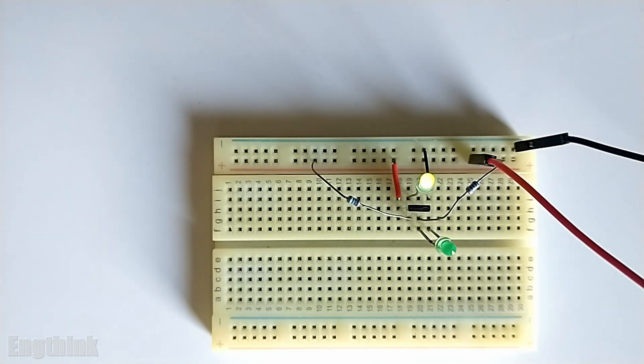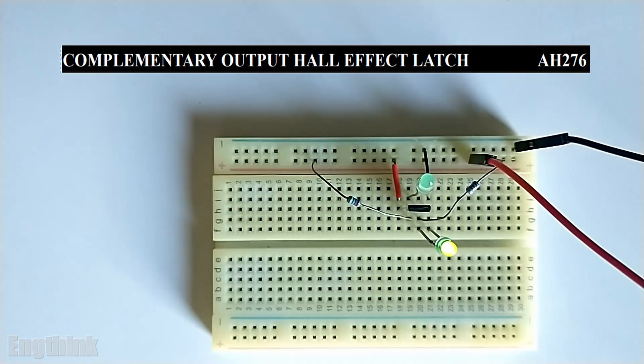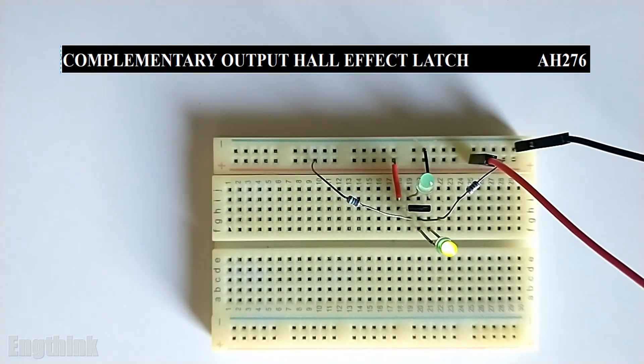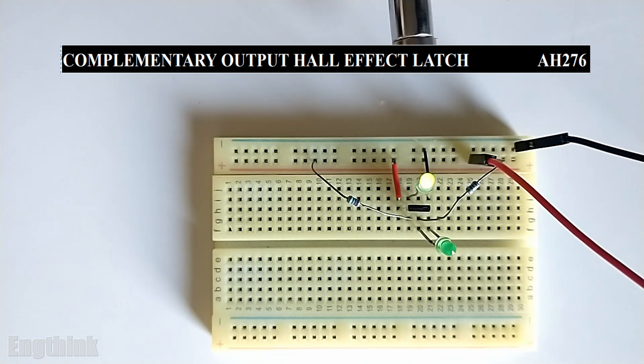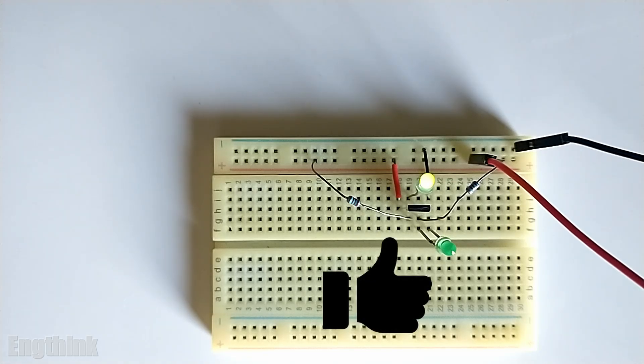So this was the demonstration of the complementary output Hall effect latch sensor, sensor code AH276. Hope you enjoyed this video. Subscribe to the channel for more content like this one and see you soon.